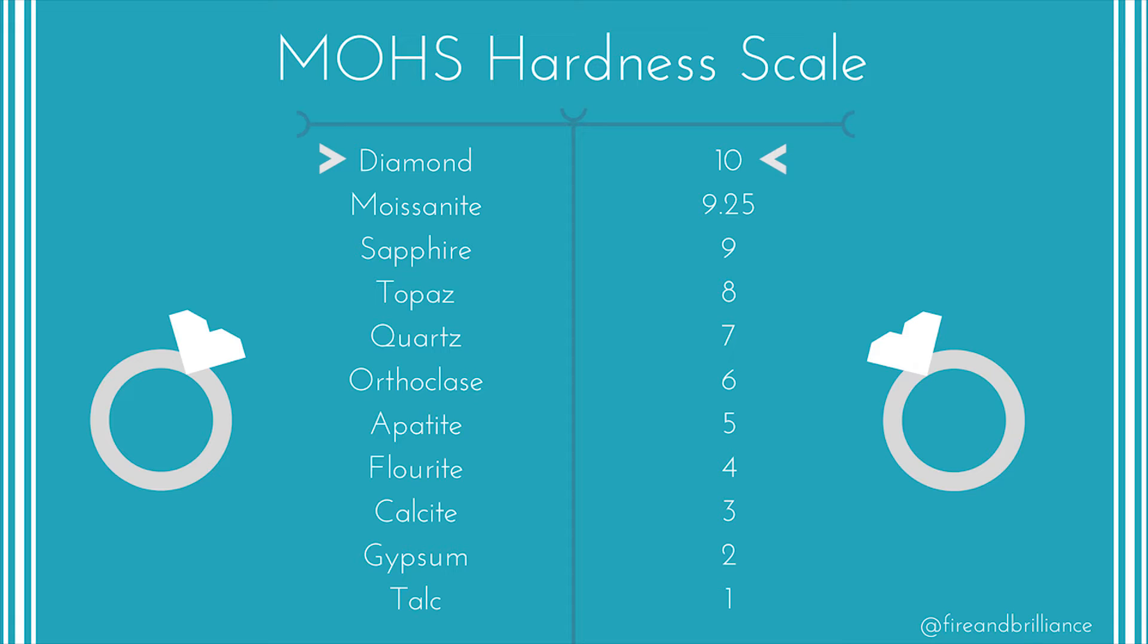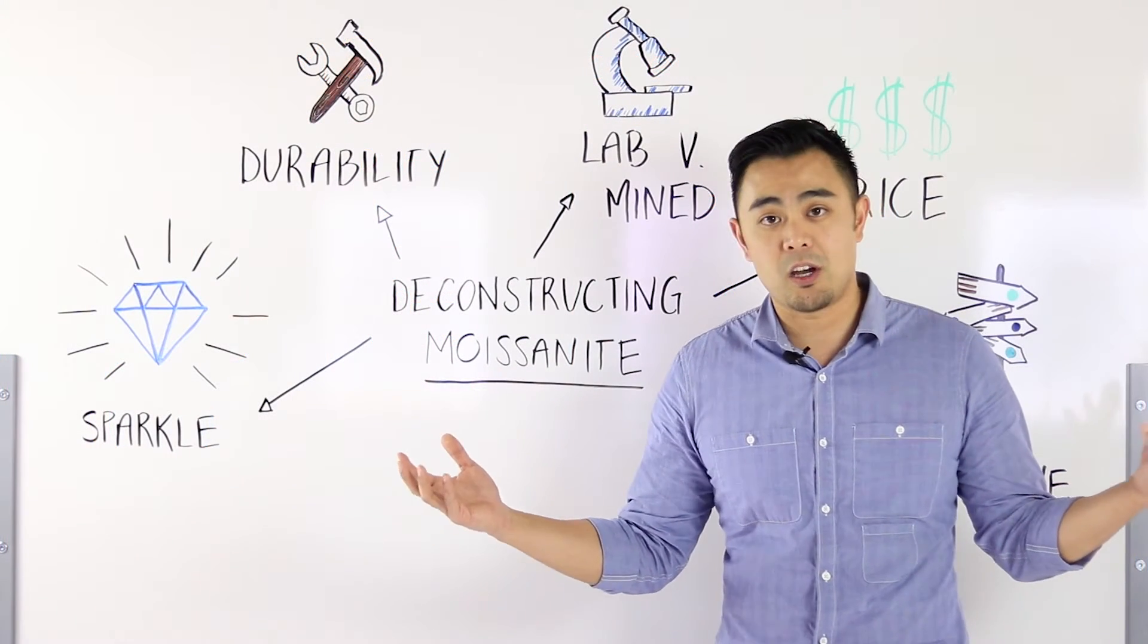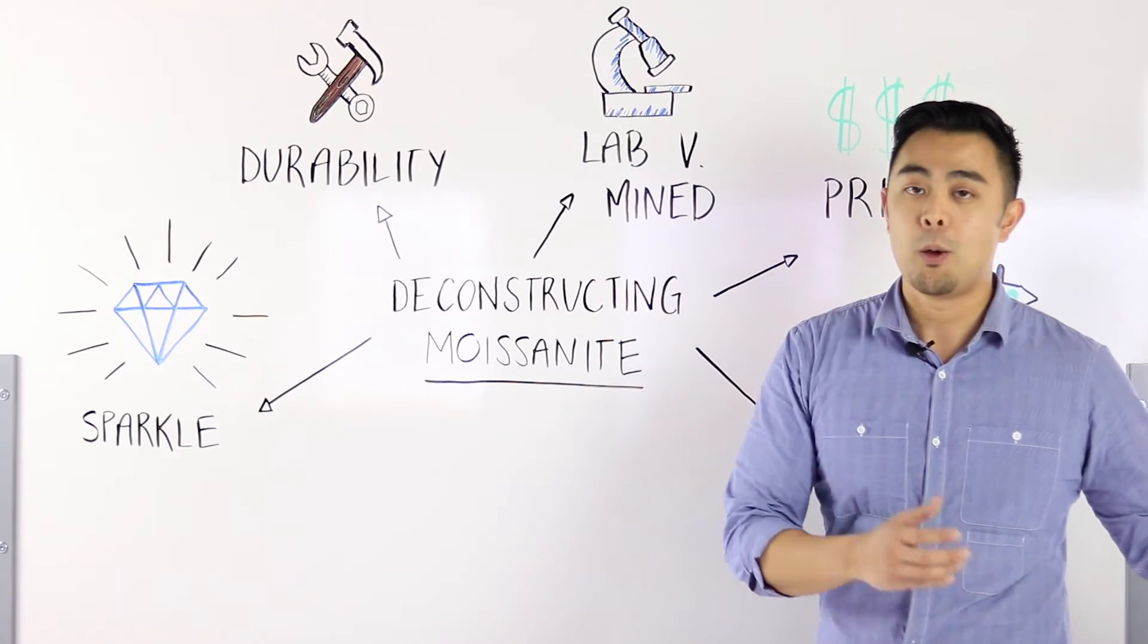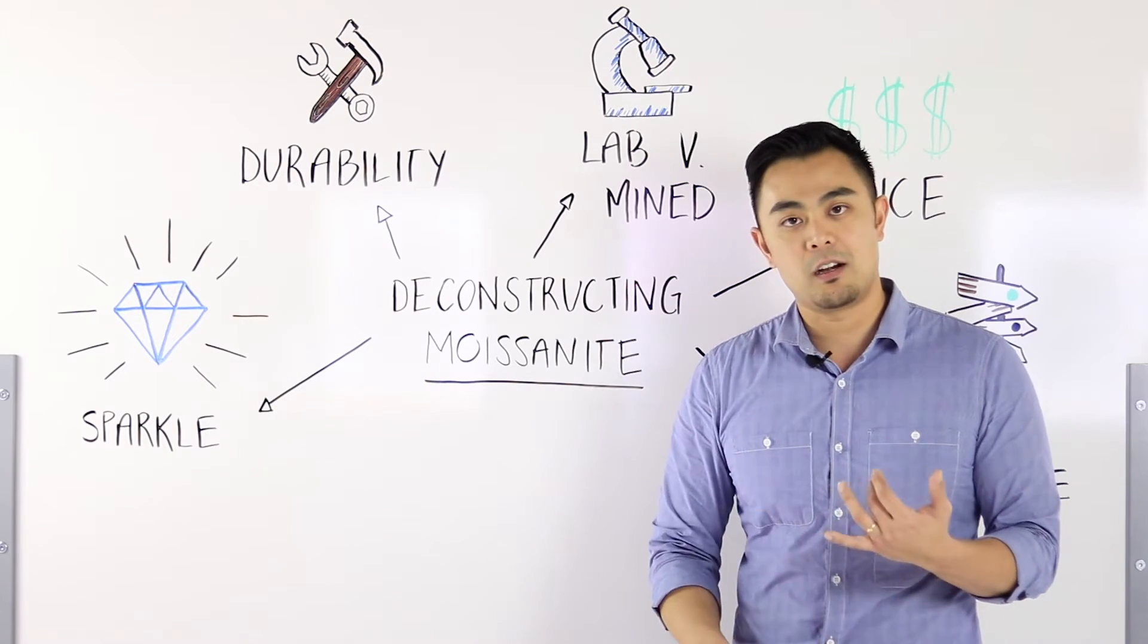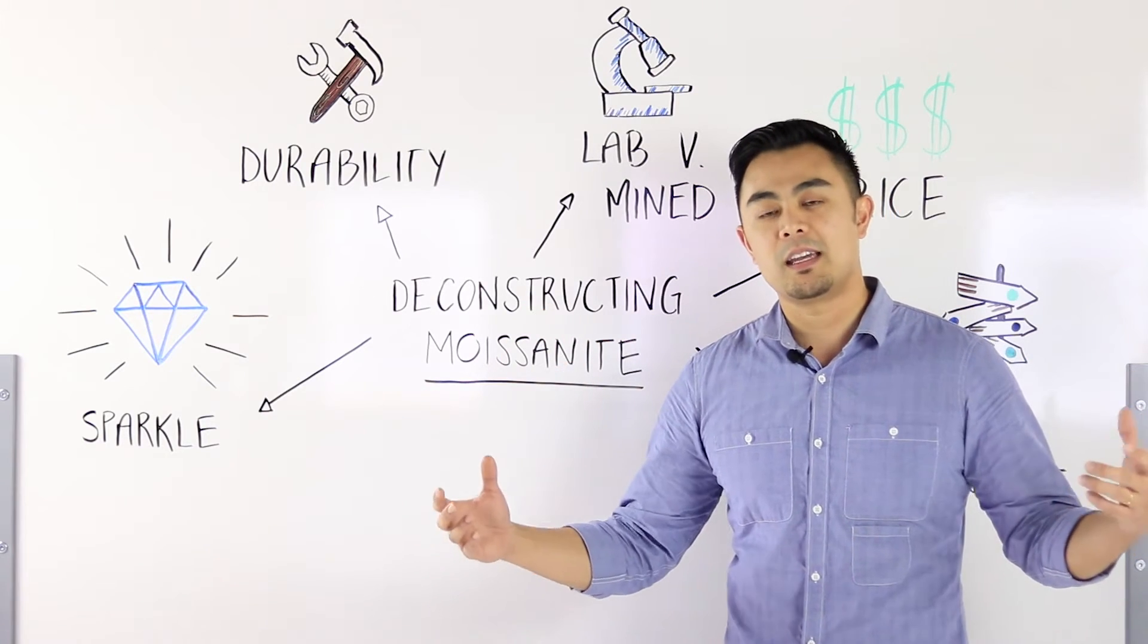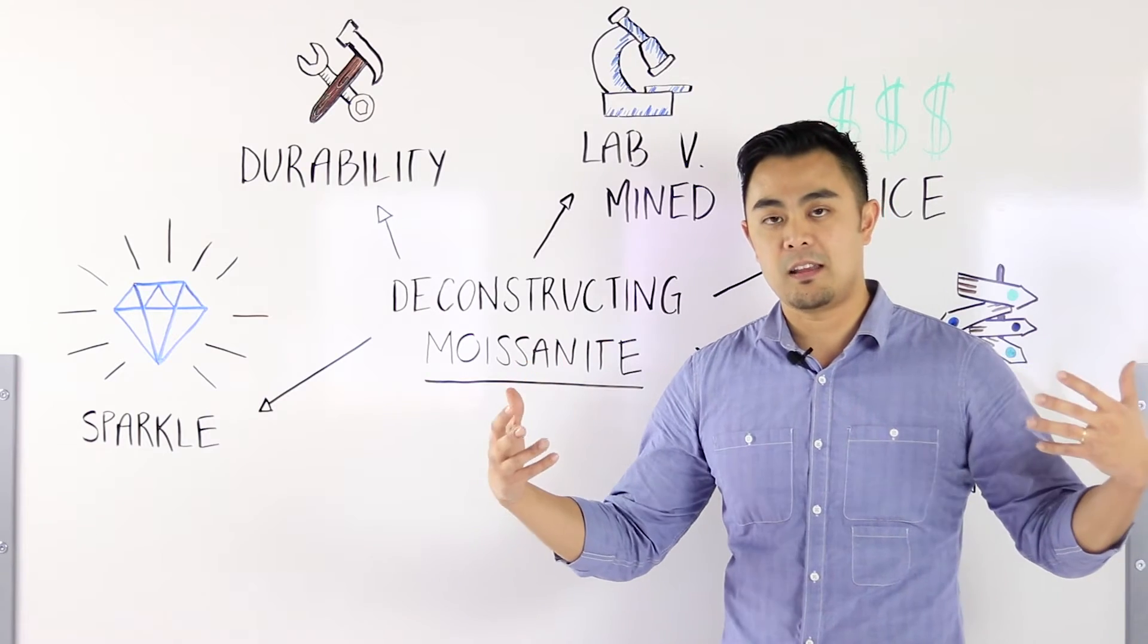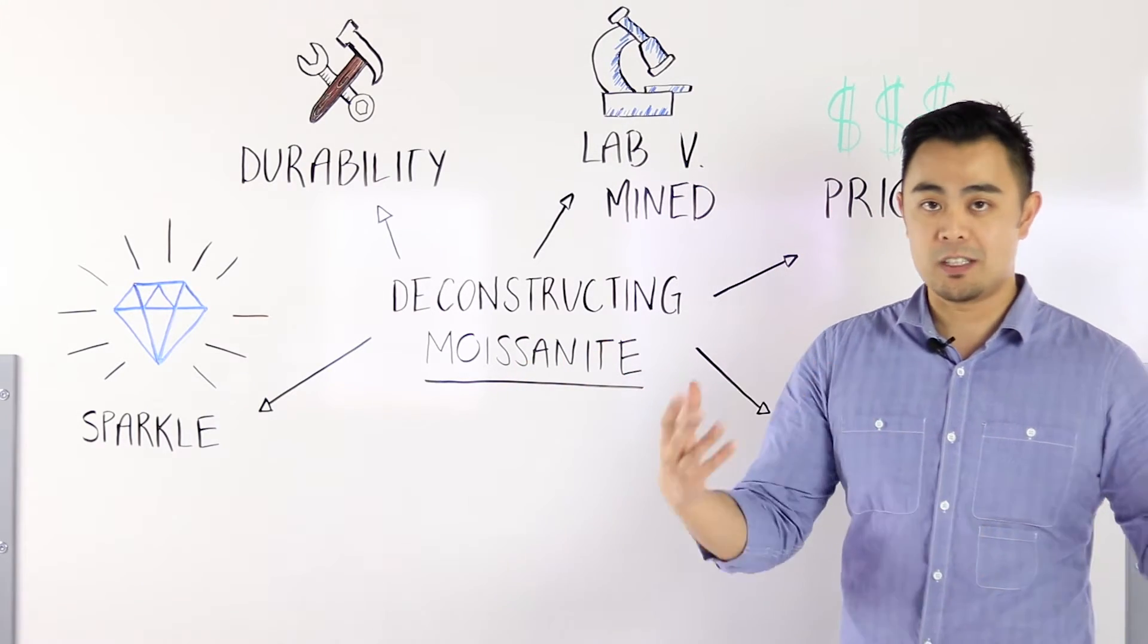It does not necessarily mean the moissanite is not hard. All that means is that it can't beat a diamond when it comes to hardness, but it is a lot harder than most natural gems such as sapphire and rubies. What all that means is that over time it can take more wear and tear, it won't get scratched as easily, and it's almost very difficult to actually scratch it at all.